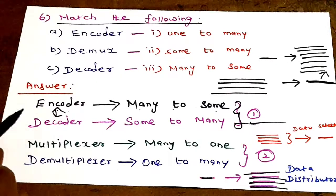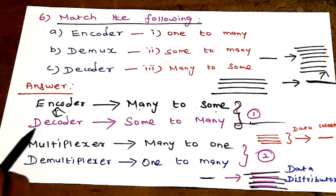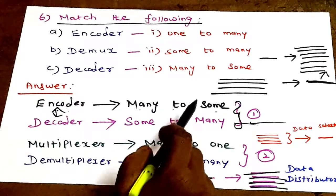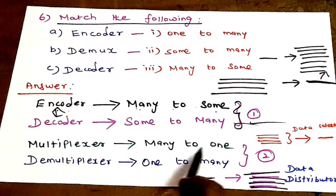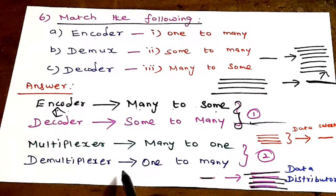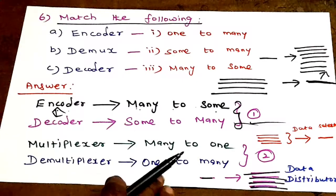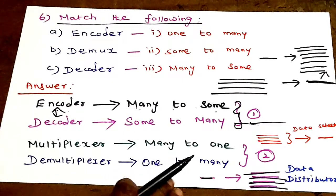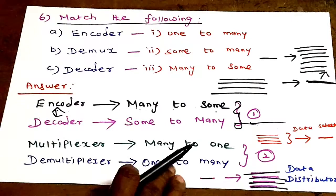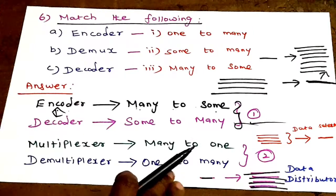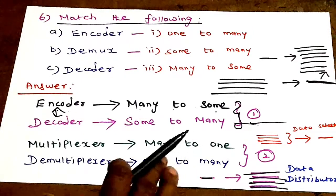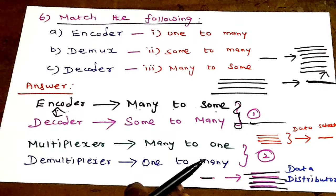Encoder and Decoder are opposites; Multiplexer and Demultiplexer are also opposites. Encoder and Decoder form one concept pair, and Multiplexer and Demultiplexer form another. You can use data distribution to understand these concepts.